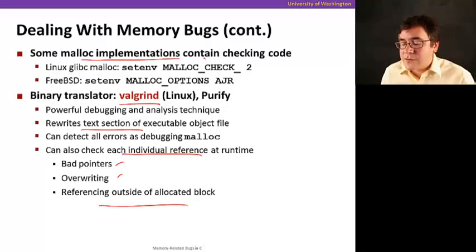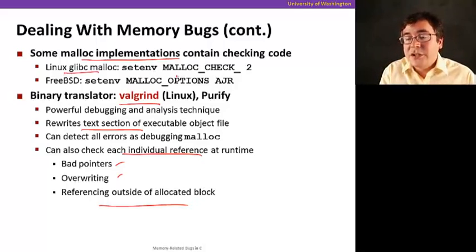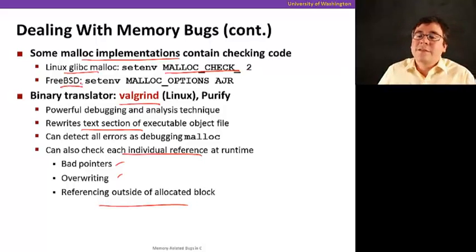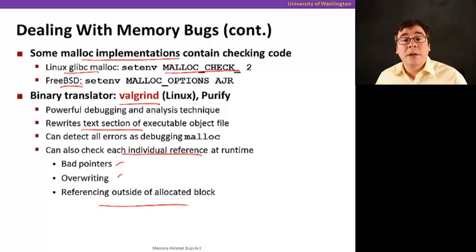And by the way, some malloc implementations contain some check code. So you can actually set, so if you use the Linux glibc malloc library, you can set an environment variable that's going to check some of the calls to the memory allocator. It's an equivalent of things available in FreeBSD. Well, this concludes our section on memory allocation, and I hope you learned what you should avoid in writing C code with pointers. Thank you.